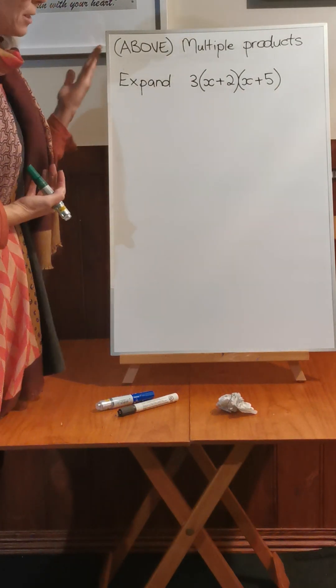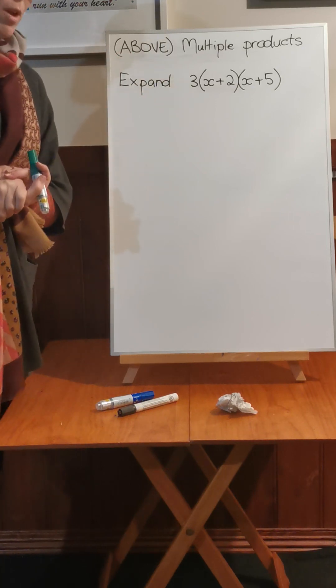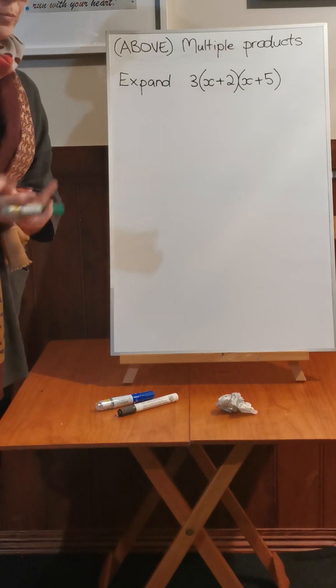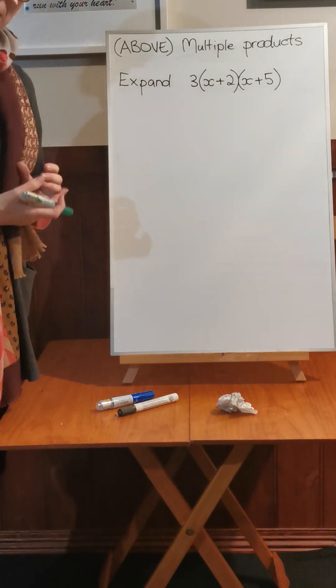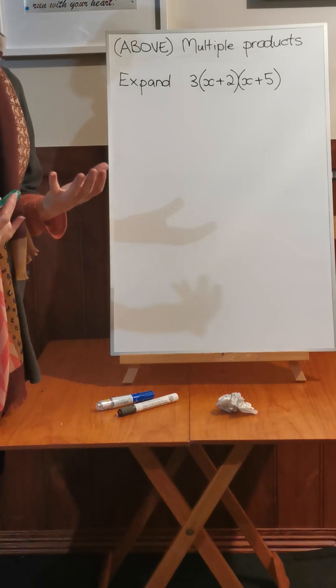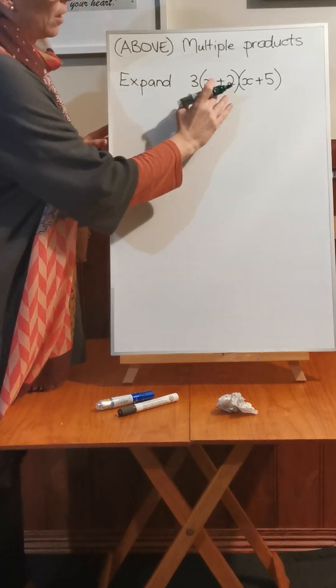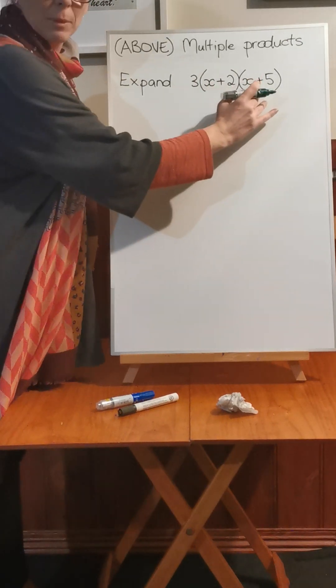In this video I'm going to look at some above standard work which is expanding multiple products. I'm going to show you two different methods. Sometimes one method is better than the other for you, but it is always your choice which one you use. So we're expanding 3 times x plus 2 times x plus 5.